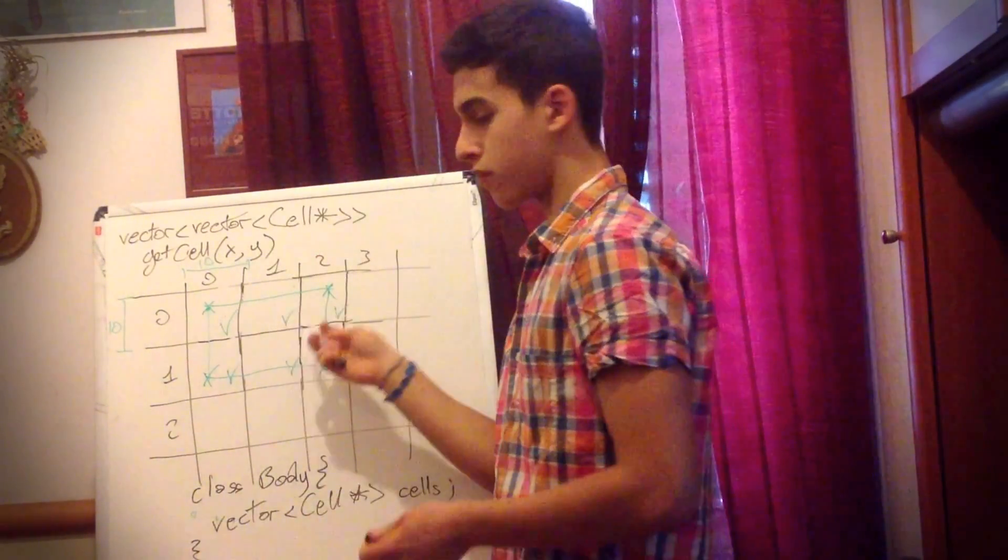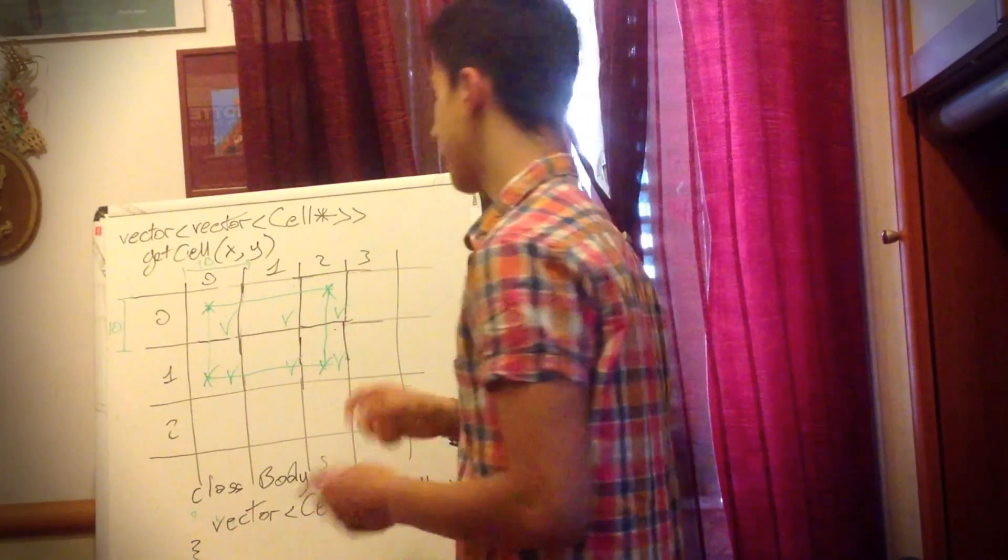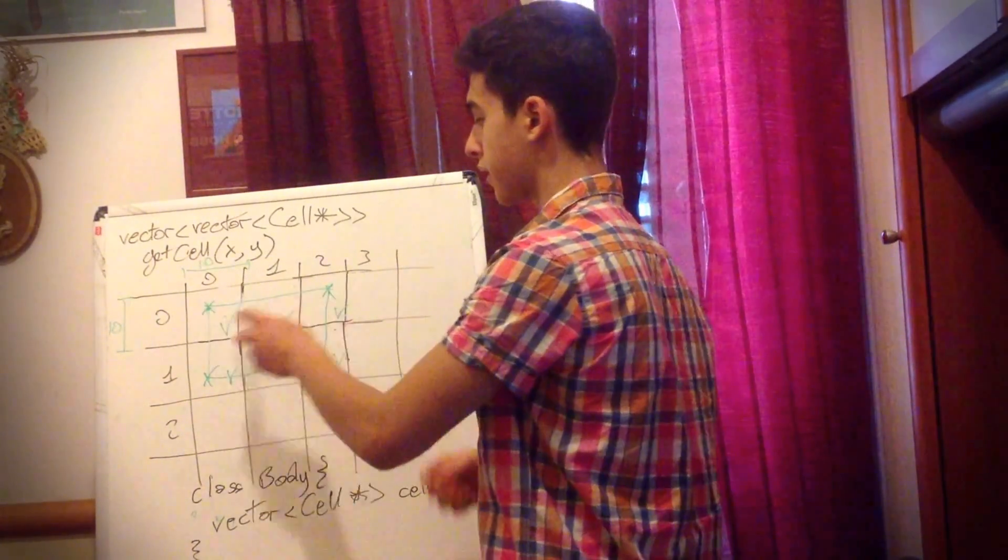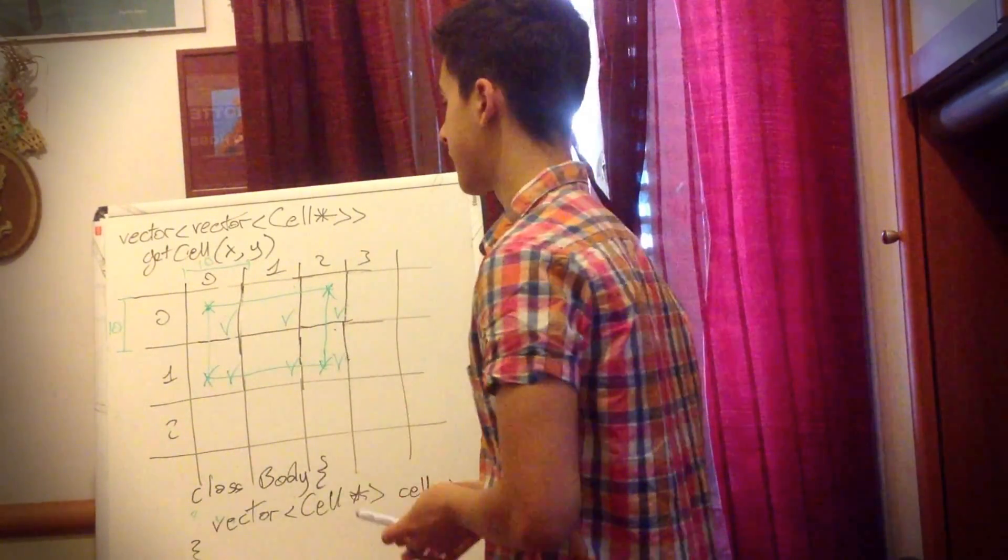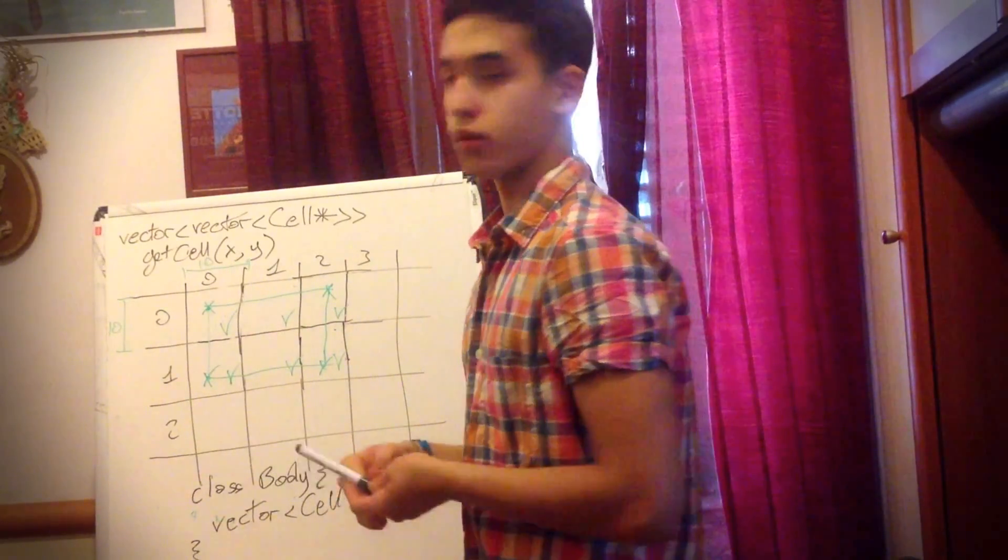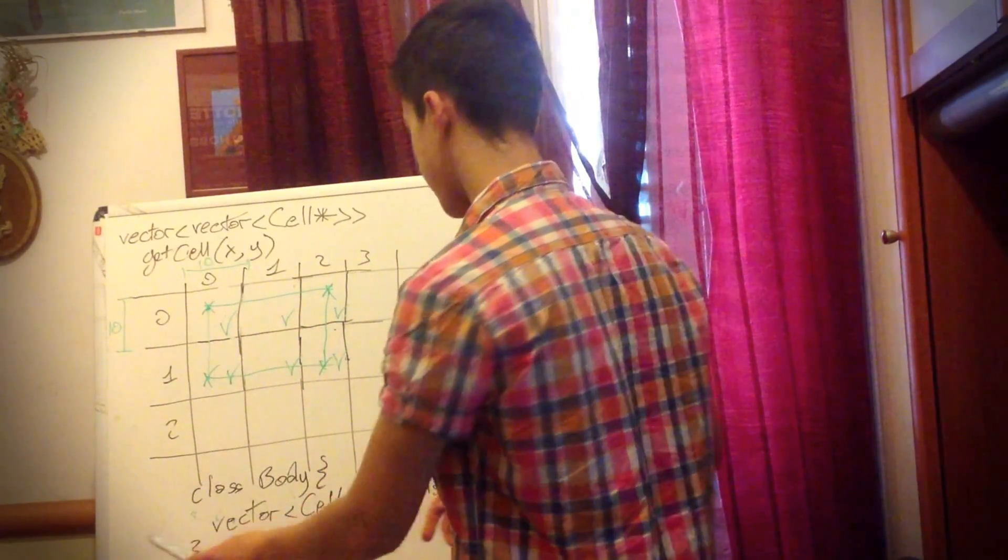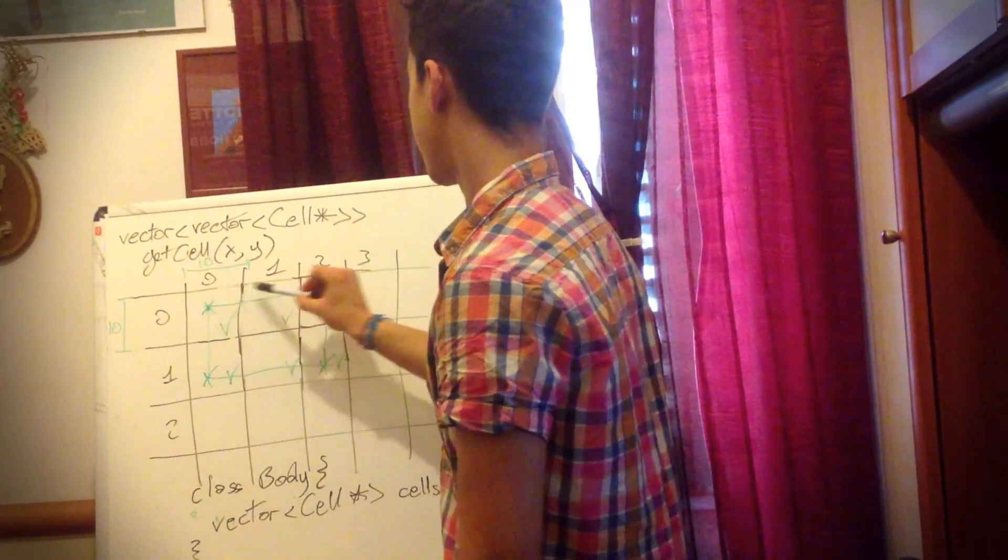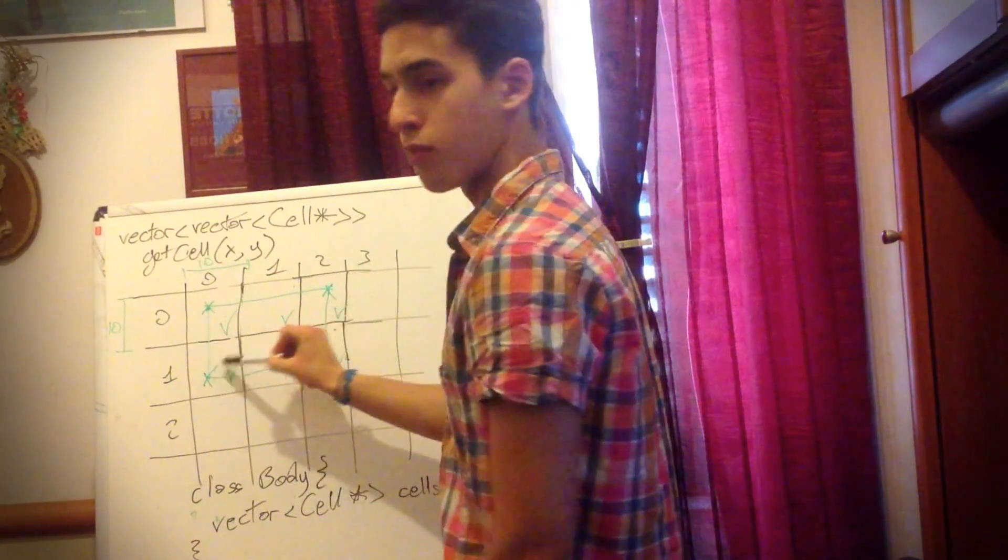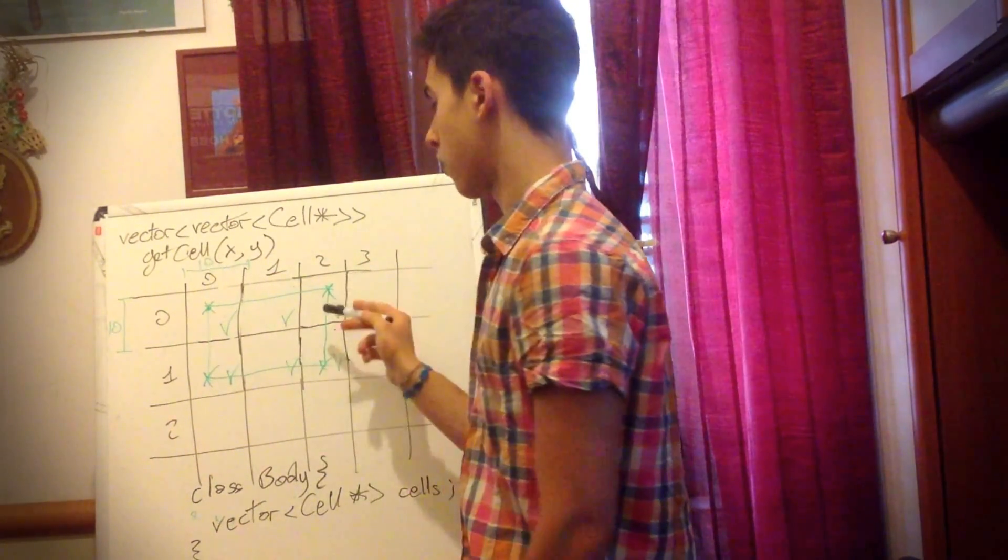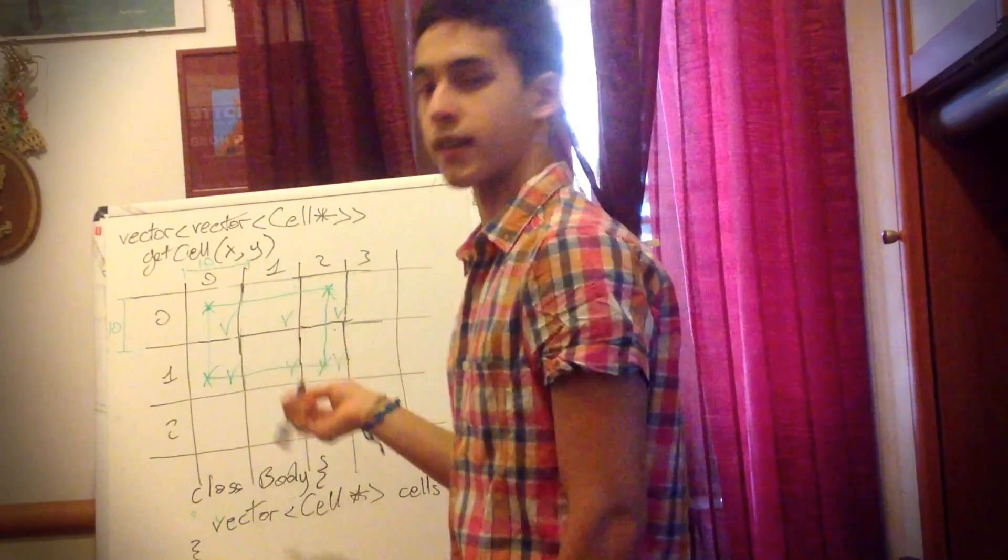So every time the body moves you can check if one of the vertices has changed its cell position. And if it did, you just clear this vector and repeat the loop that allows you to store the body cells inside the body itself.